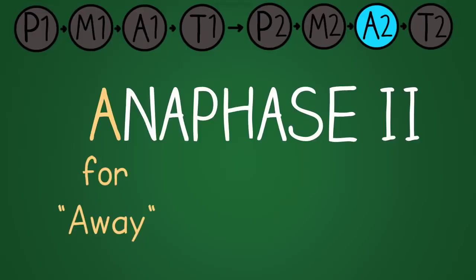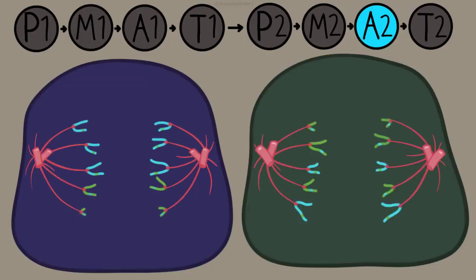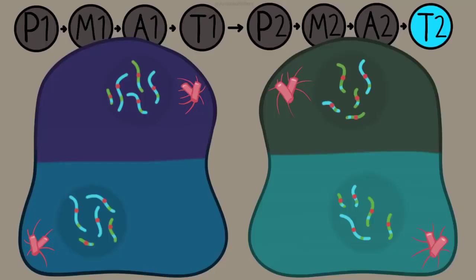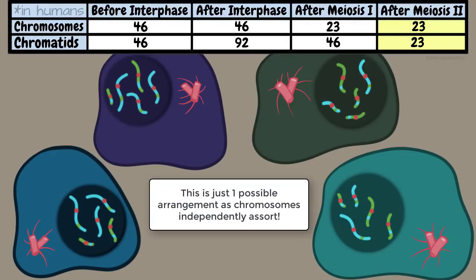Anaphase two, remember A for away, but this time it's the chromatids that are going to be pulled away by the spindle fibers. In telophase two, you can see the nuclei reforming and you can also see that the two cells have divided, there's going to be four cells forming. Cytokinesis will follow to completely split the cytoplasm.